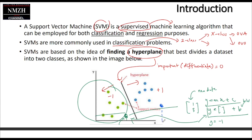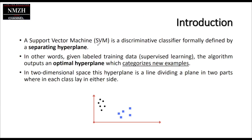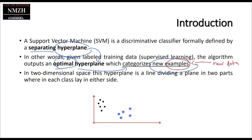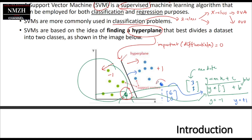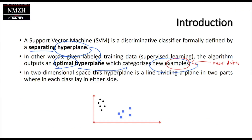Similarly, if we have another new data point at coordinates (6, 3) and put it through the same model, the y-value could be plus one, meaning the new data (shown in blue) lies on the other side of the hyperplane. The goal is to find the optimal hyperplane to categorize new examples. In two-dimensional space, this hyperplane is a line that divides the plane into two parts.